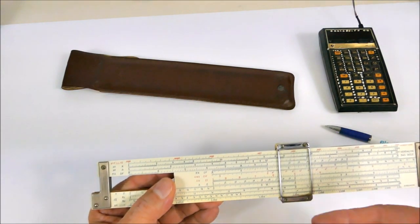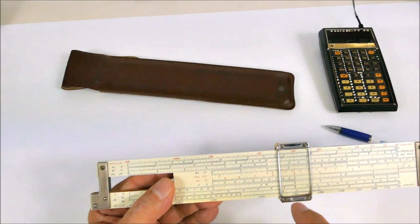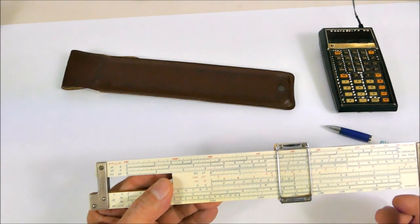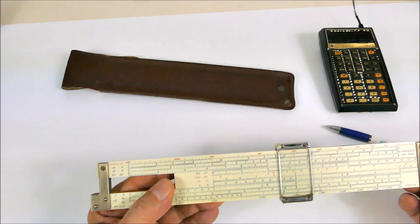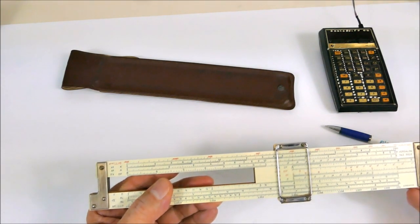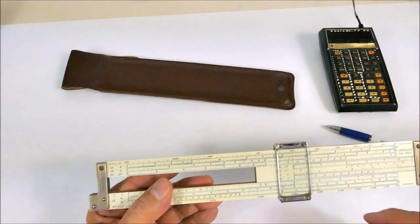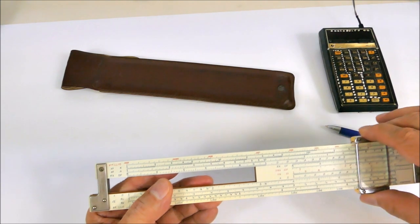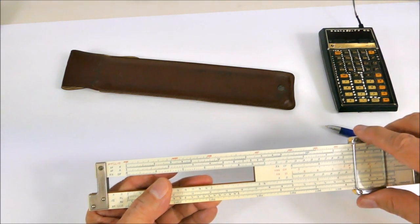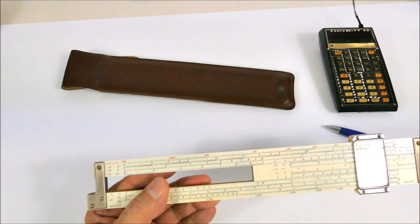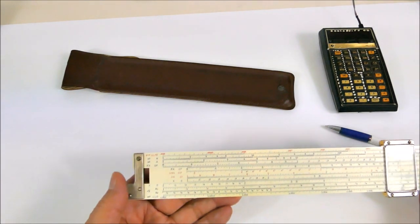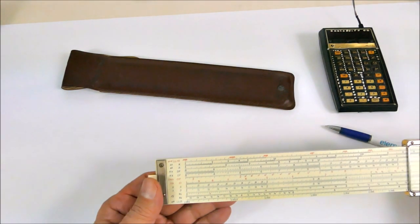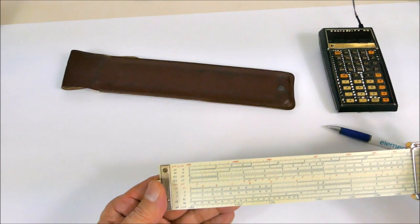So we multiply by two on the C scale, we get four. And you can accumulate results, so you don't actually have to read off the four. If you want to multiply by something else, you just move the index over to the first result and then move the cursor to wherever you want, so by two again gives you eight. That's multiplication.